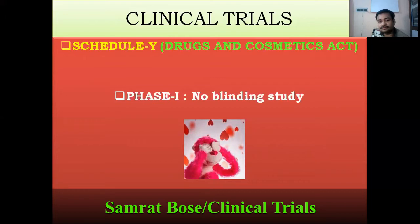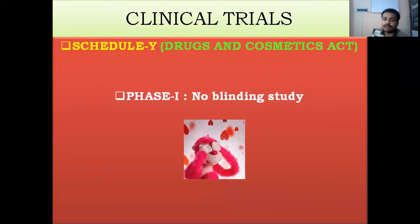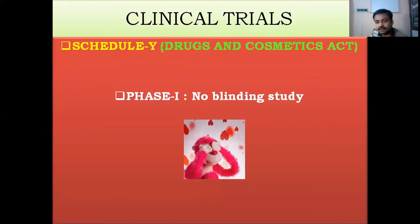Phase 1 is a no-blinding study. Blinding study means information is hidden from patients or doctors. In Phase 1, all volunteers — whether patients or healthy volunteers — are fully informed about the molecule, its purpose, and how it works, as per their understanding level. All physicians, patients, and volunteers receive complete information, so nothing is hidden from them. That is why Phase 1 is called a no-blinding study.